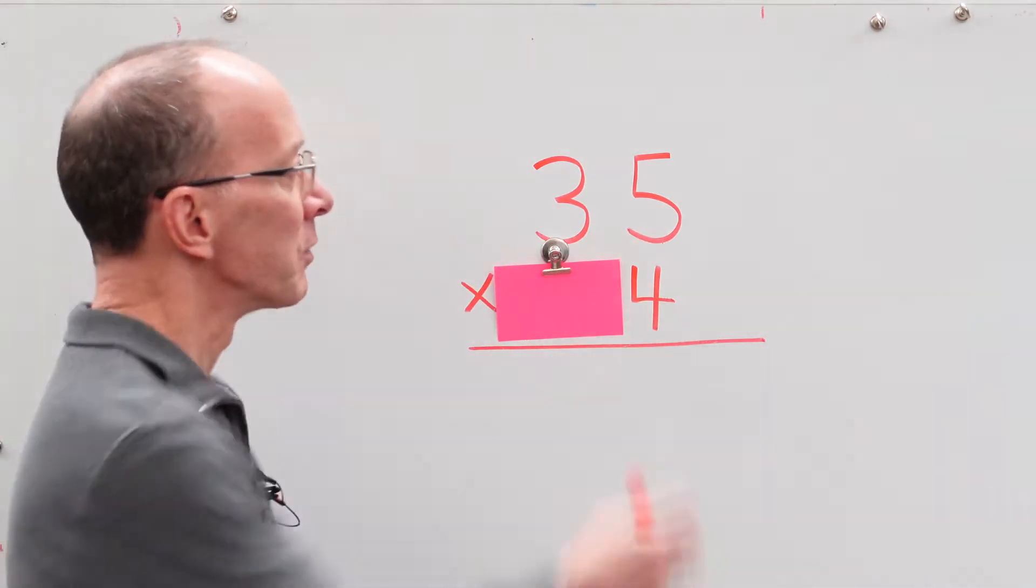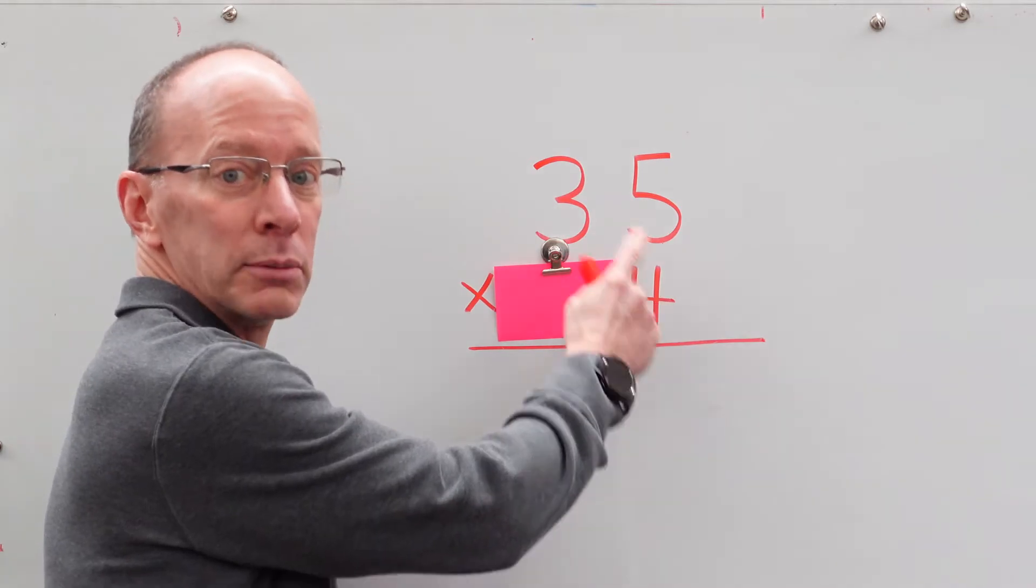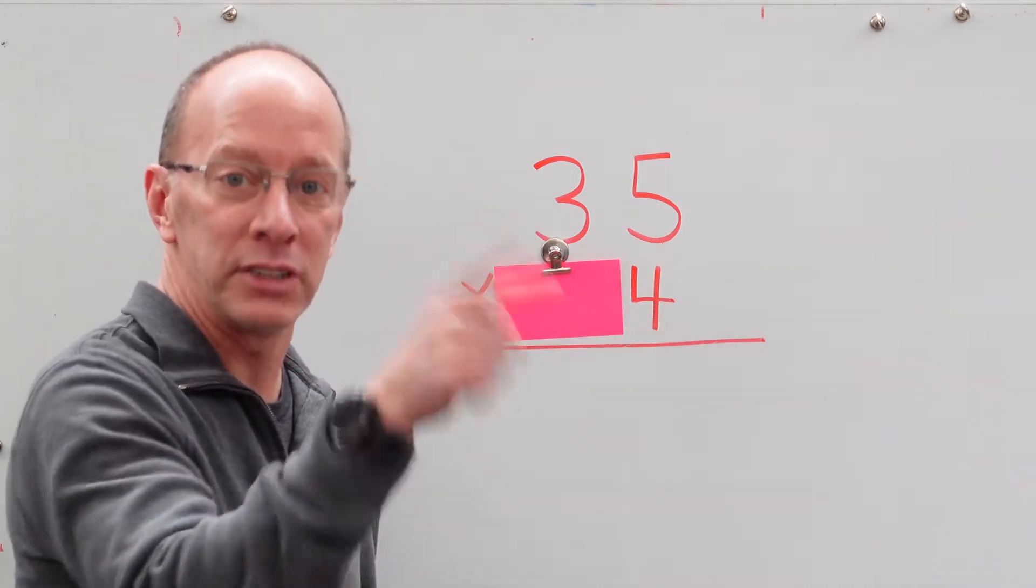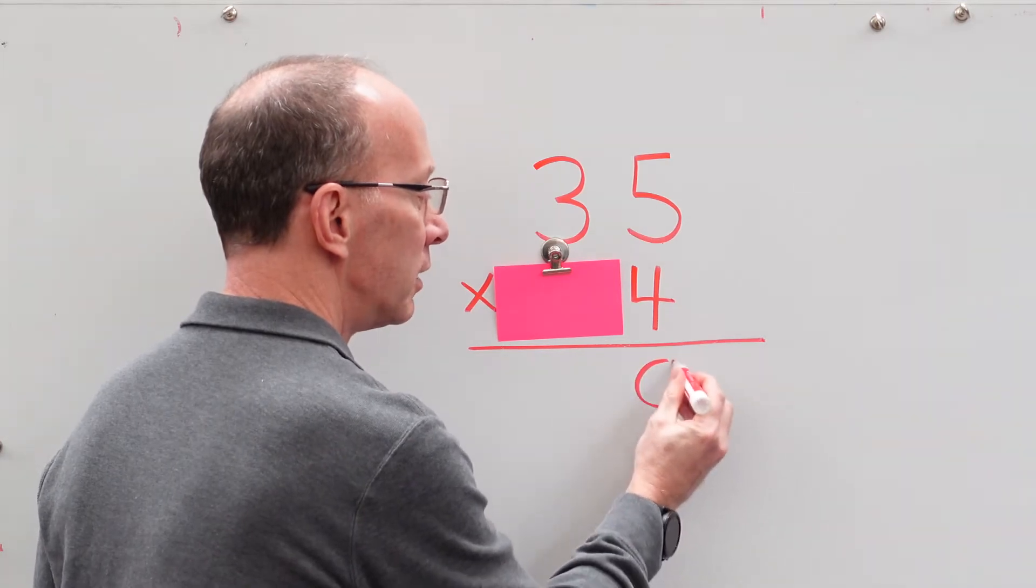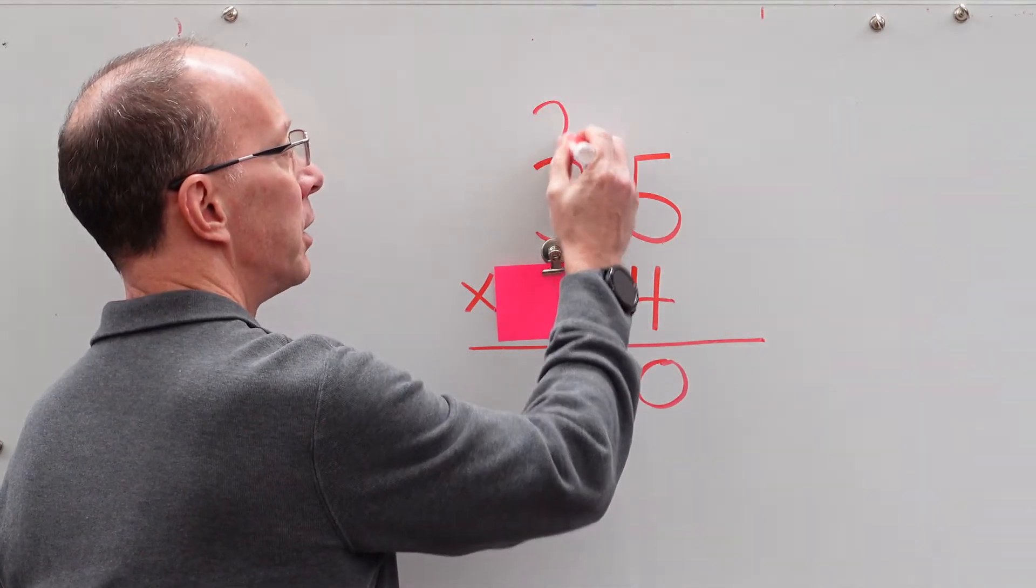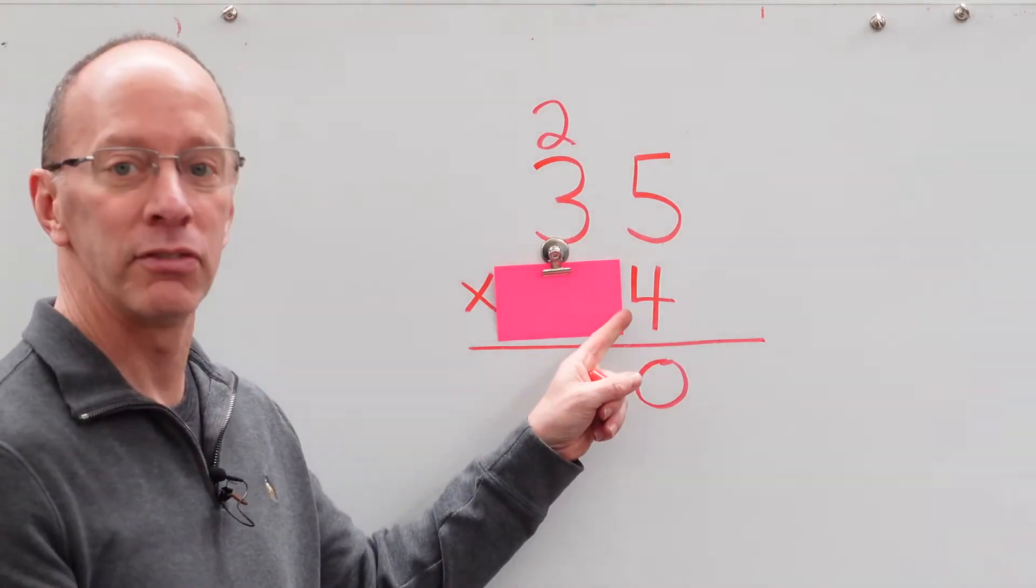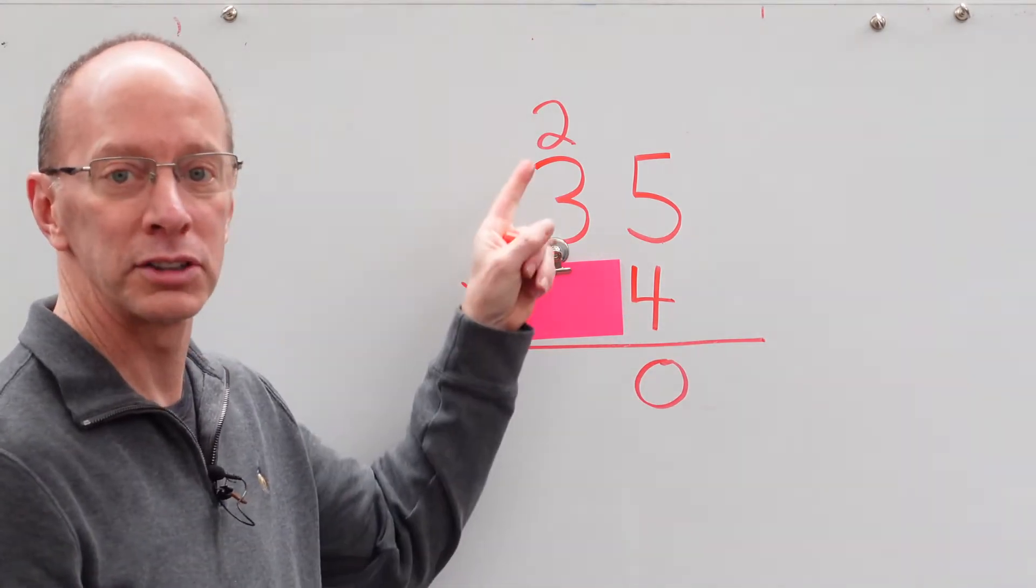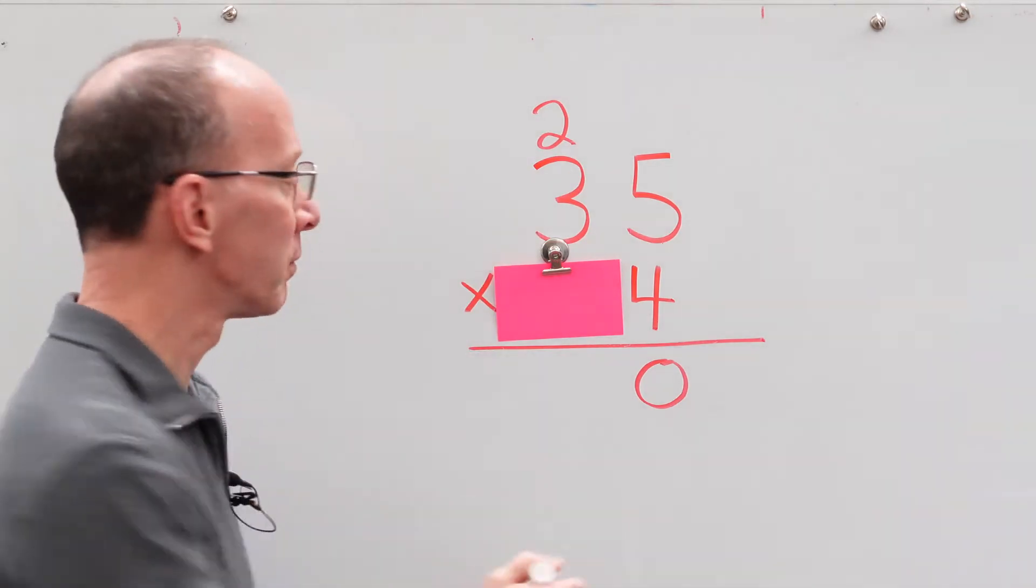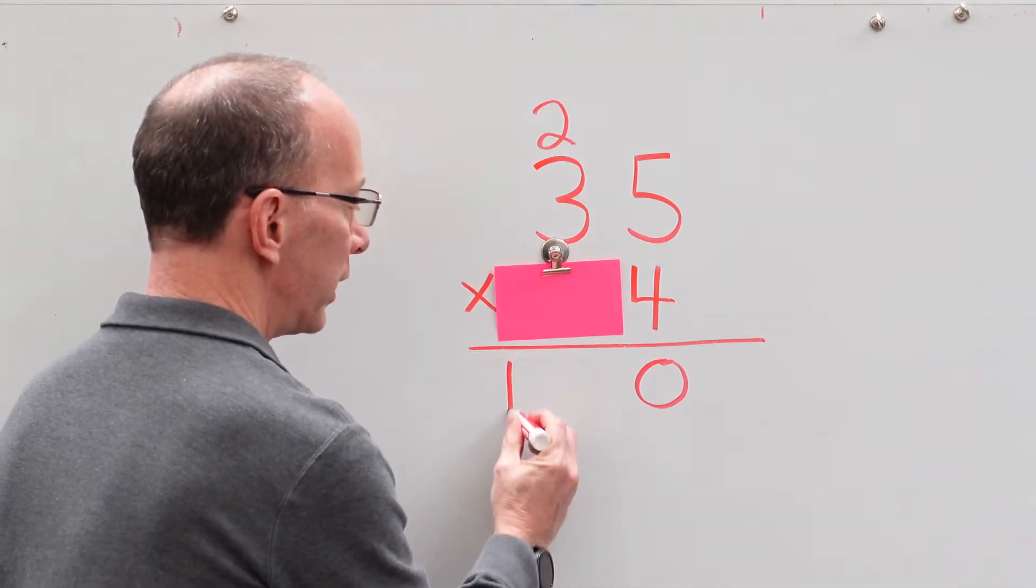So let's go to work on this right away. We take 4. 4 times 5 is 20. All right, so I put the 0 right here, and I put the 2 up here. So then I take 4 times 3, you got it, 12. 12 plus 2, 14. And so I put 14 right here.